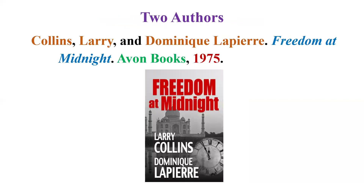For a book with two authors — for example Larry Collins and Dominique Lapierre's Freedom at Midnight — invert only the first author's name: Collins, Larry, and Dominique Lapierre. Freedom at Midnight. Ebon Books, 1975. Only the first author's name is inverted; the second author's name is written in normal order, preceded by the word 'and'.